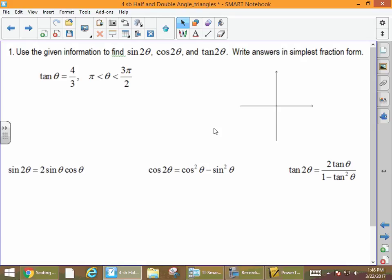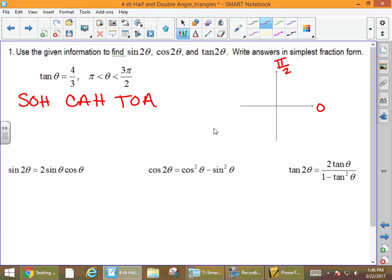A couple things for people who have been absent: keep in mind that we need to be aware that sine equals the opposite over the hypotenuse, cosine is the adjacent divided by the hypotenuse, and tangent is the opposite divided by the adjacent. The next thing that might be helpful is to label the coordinate plane. Here's 0, here's π/2, here's π, here's 3π/2.